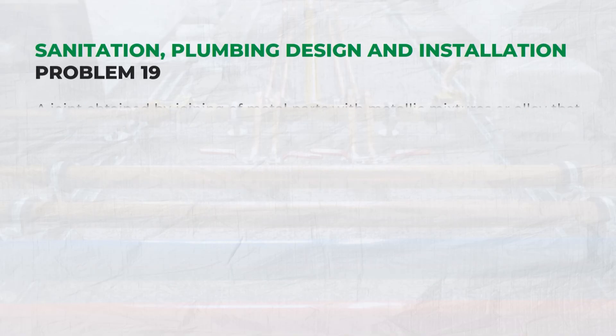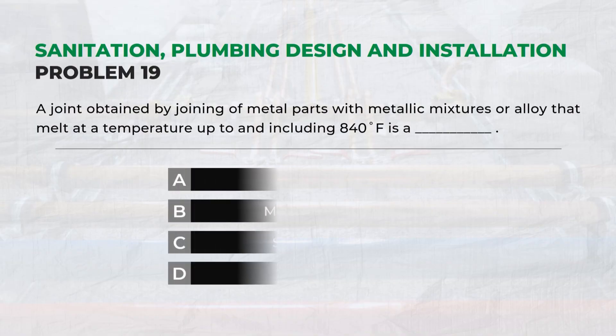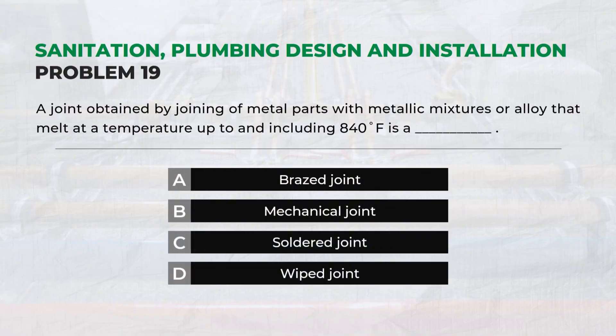A joint obtained by joining of metal parts with metallic mixtures or alloy that melt at a temperature up to and including 840 degrees Fahrenheit is C: Soldered joint.